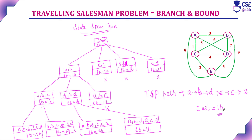If we also considered paths through A→C, we would need to compute many more state space tree components, making it hectic work. To reduce the amount of work, we apply the constraint of visiting vertex B before vertex C. This concludes the procedure for implementing TSP using branch and bound.